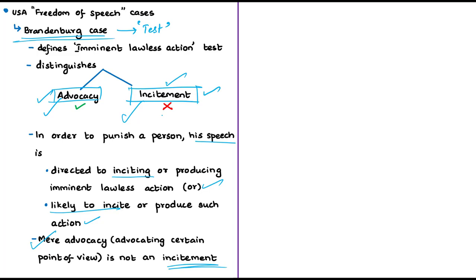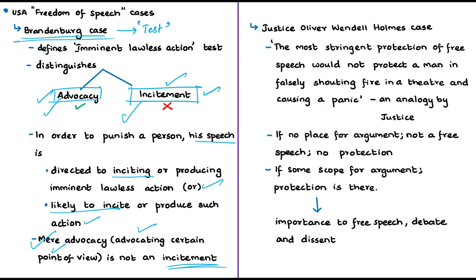Citing this Brandenburg case, Justice Nariman highlighted that only incitement is not afforded any protection and must be punished, but not advocacy. The authors also mention another example on freedom of speech: the phrase by Justice Oliver Wendell Holmes of the US Supreme Court: 'The most stringent protection of free speech would not protect a man in falsely shouting fire in a theater and causing a panic.' This phrase explains that if a person falsely shouts fire in a theater and causes panic — where there is no scope for argument — it is not free speech and should not offer any protection. But if there is scope for argument, no matter how provocative the speech, it should be allowed.